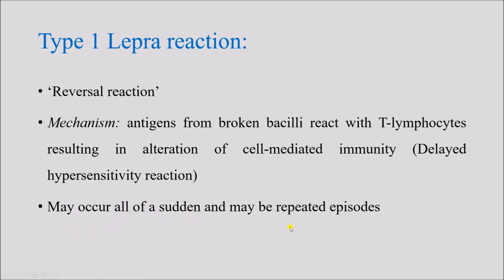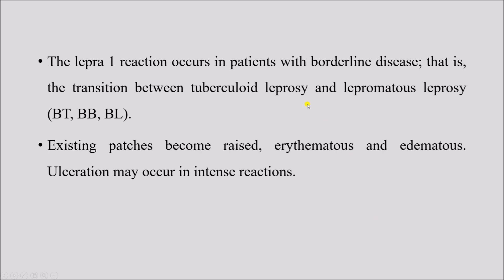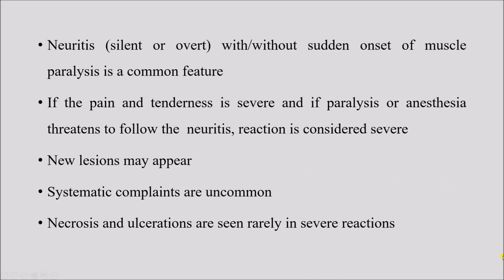Type 1 reaction may occur suddenly and there can be repeated episodes. It occurs in patients with borderline diseases — borderline tuberculoid, borderline leprosy, and borderline lepromatous leprosy. The existing skin patches become raised, erythematous, and edematous; ulceration can also occur in intense reactions. In type 1 leprosy reaction, the existing patches change and become raised, edematous, and sometimes ulcerated.